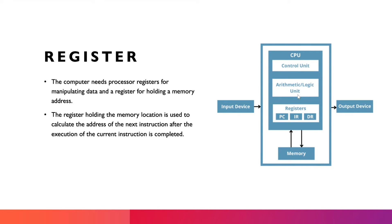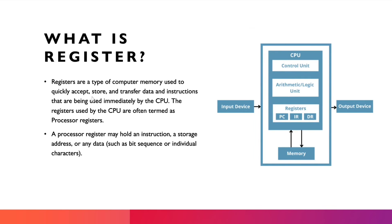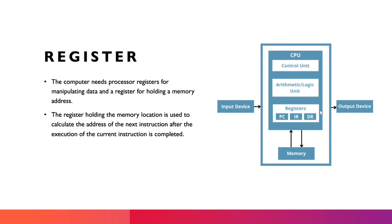The register helps the CPU execute tasks. We can perform tasks using input devices such as a keyboard. Instructions are input to the CPU, which uses the register to process and store data. When a register is available, data can flow — data is transferred, stored, and quickly accepted. The task output is sent to the output device.